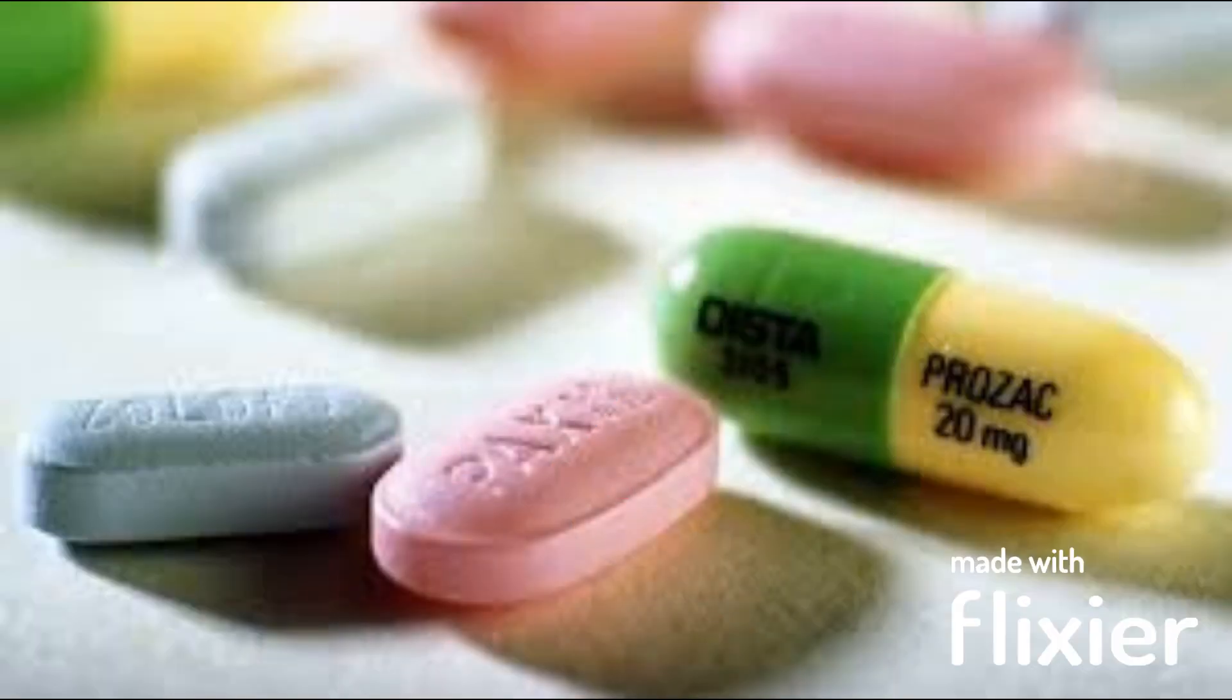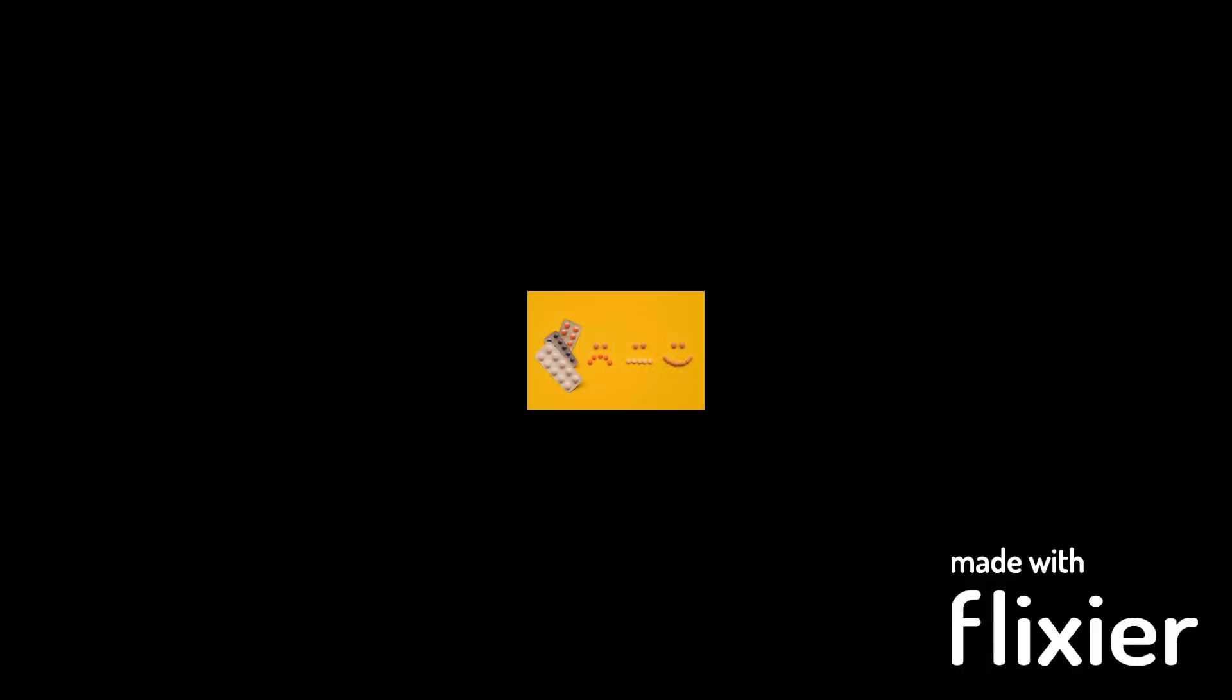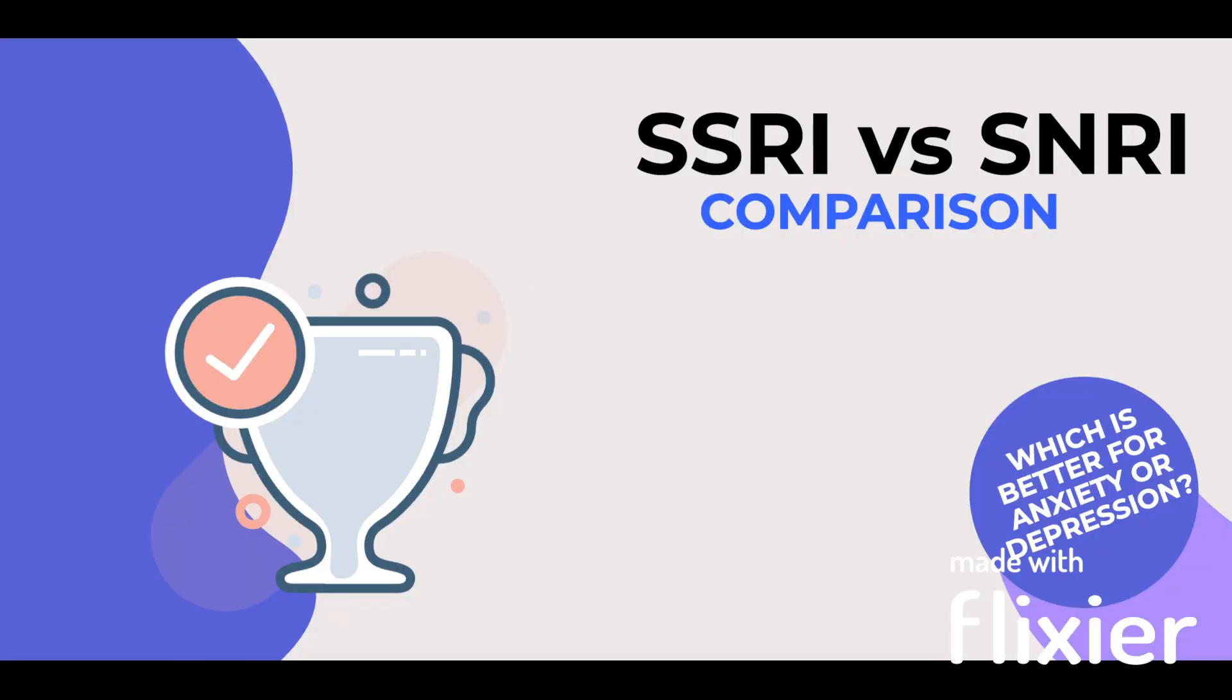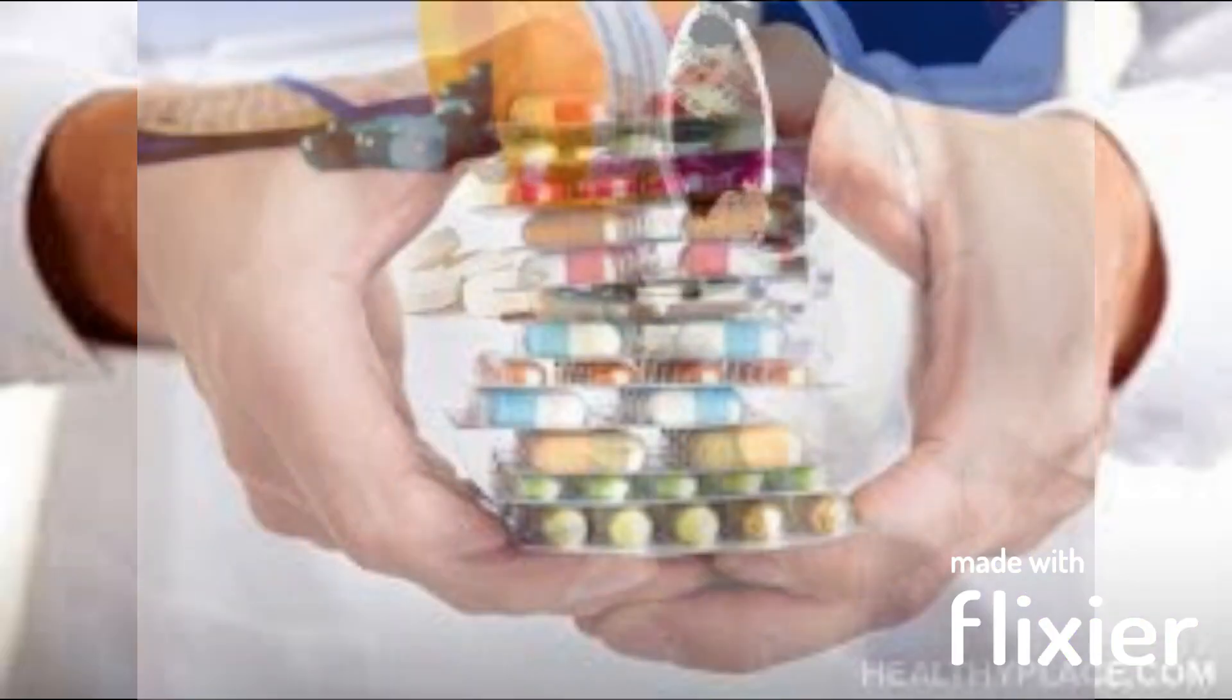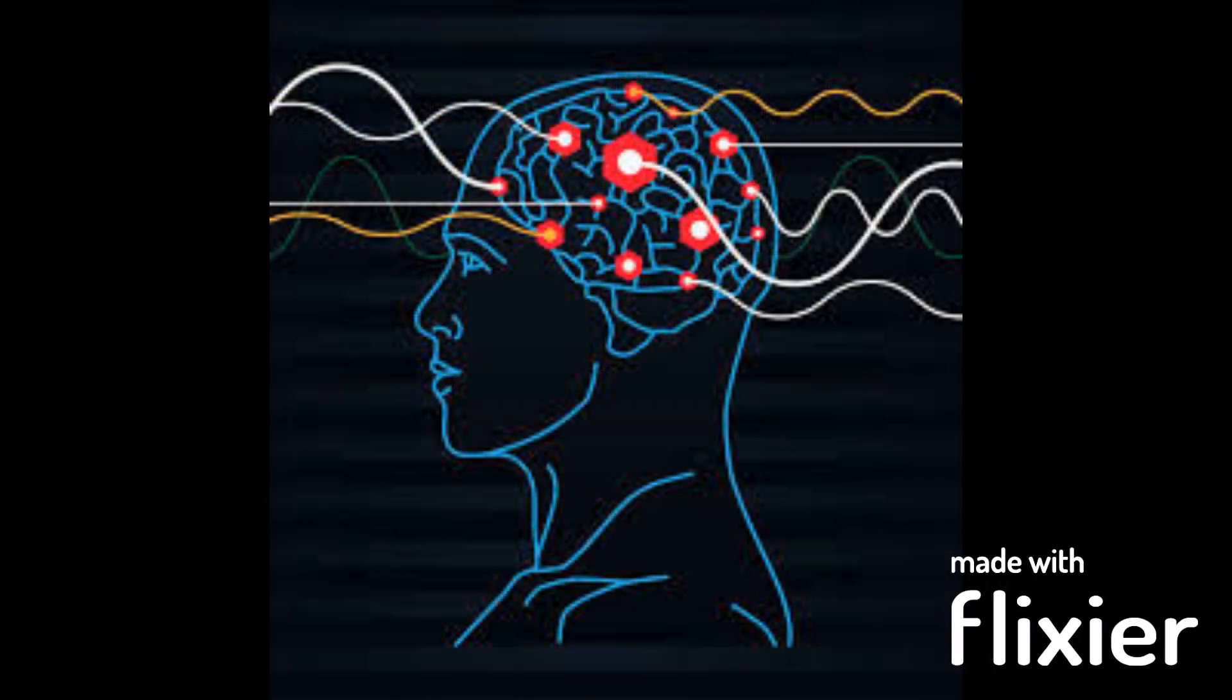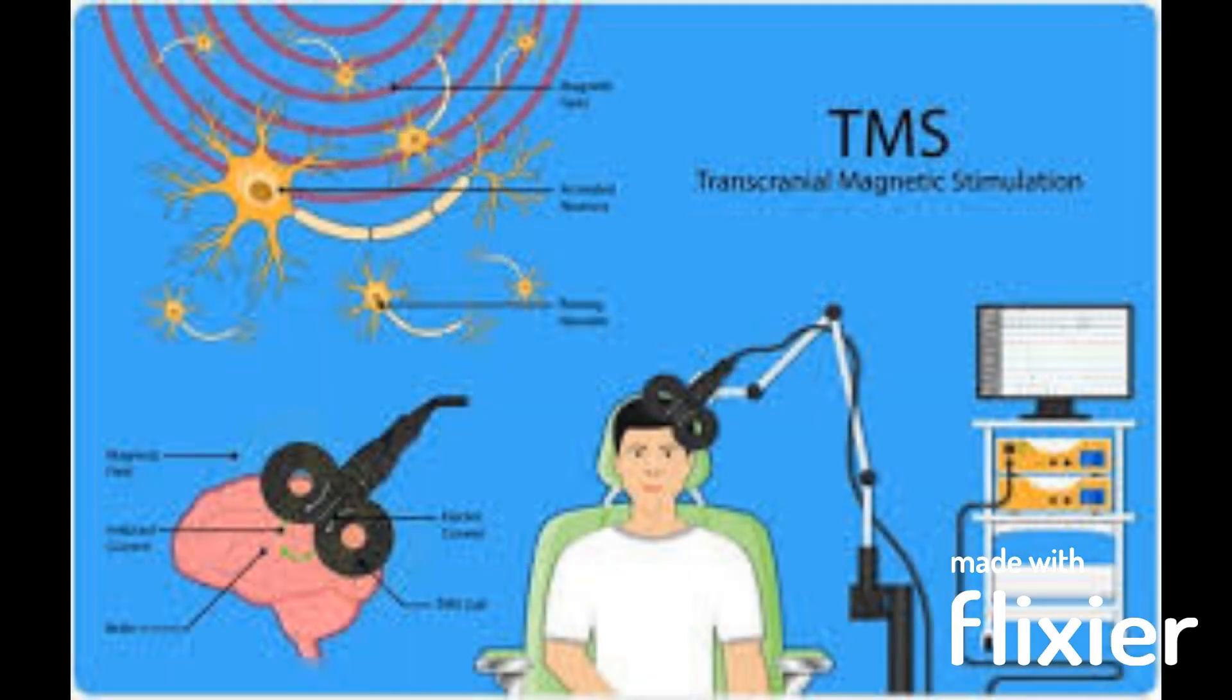نمبر دو ادویات: Antidepressants ادویات کی مختلف قسمیں جس میں Selective Serotonin Reuptake Inhibitors، SNRIs اور دیگر تجویز کی جا سکتے ہیں۔ Mood stabilizers، antipsychotics بعض اوقات بعض قسم کی depression کے لئے antidepressants کے ساتھ مل کر استعمال کی جا سکتی ہیں۔ Transcranial Magnetic Stimulation یعنی TMS۔